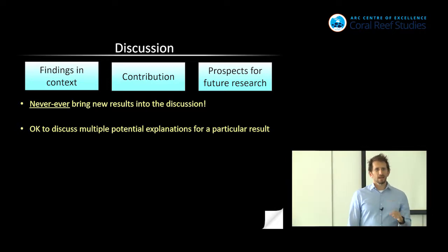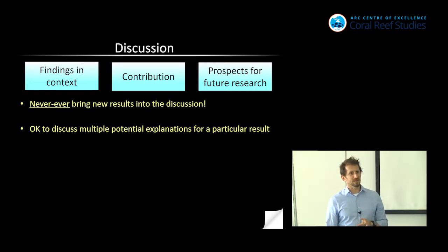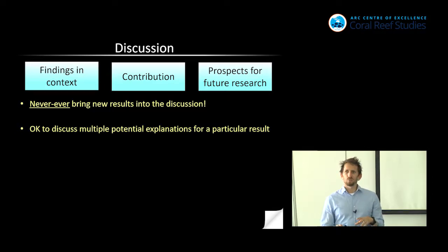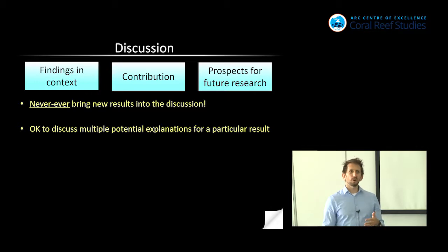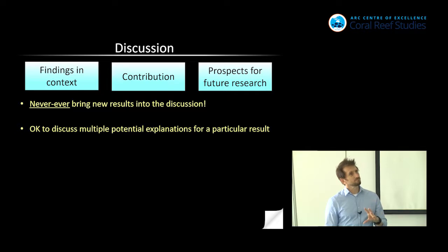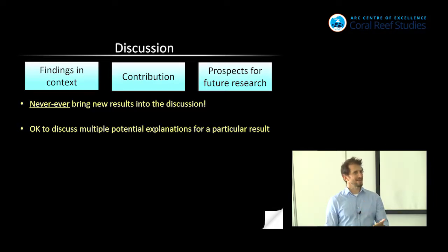In my opinion, it's really okay to discuss multiple plausible explanations for something that you found. In fact, I think of that as a real strength in a paper. You could say: we found this result, and this wasn't a mechanistic study, so we weren't able to determine the actual reason for this, but there are three main ideas in the literature — and we weren't able to parse them out, but someone in the future should start doing the mechanistic modeling. It's a scholarly way of saying: I found this relationship, I can't explain it using the methods I have, but here's why I think this may be happening.